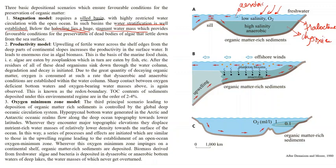In the top layer, the phytoplankton do photosynthesis. Once they die, they settle to the bottom — their dead bodies settle. Since the bottom waters are poor in oxygen content, they get preserved, and thus this becomes organic matter-rich sediment. These sediments lead to the formation of petroleum source rock.